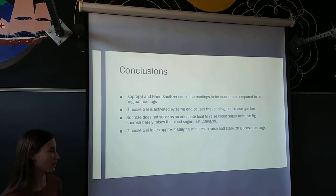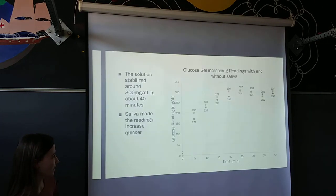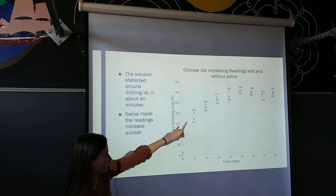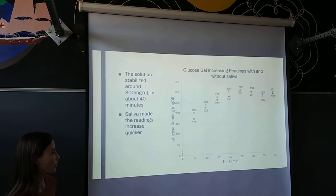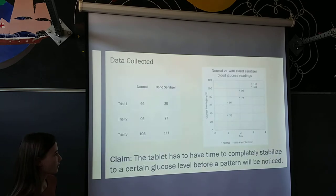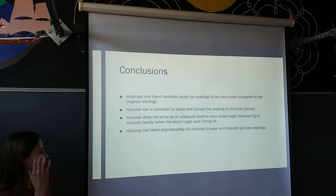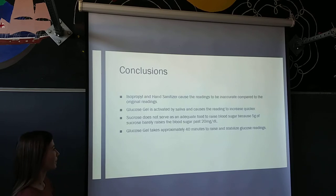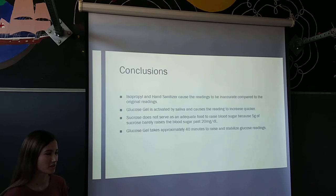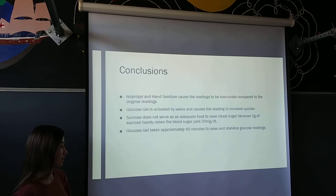The conclusion I was able to draw was that isopropyl alcohol and hand sanitizer caused the readings to be inaccurate compared to the baseline. From the previous tests and trial-and-error, I also had three other conclusions: the glucose gel is activated by saliva and causes readings to increase quicker — stabilizing at around 20 minutes instead of 40 minutes without saliva. Sucrose does not serve as an adequate food to raise blood sugar, as 5 grams barely raised it past 20 mg/dL, meaning it wouldn't help a diabetic with low blood sugar very quickly. And glucose gel takes approximately 40 minutes to raise and stabilize glucose readings.